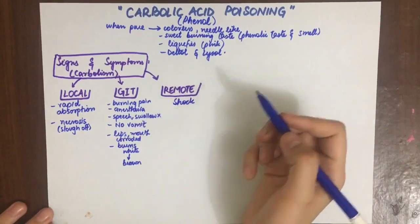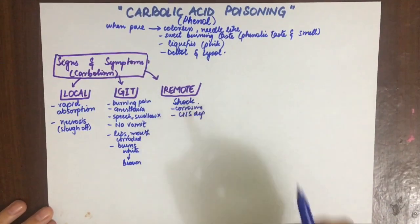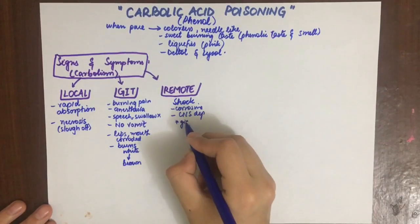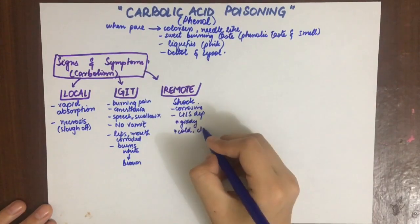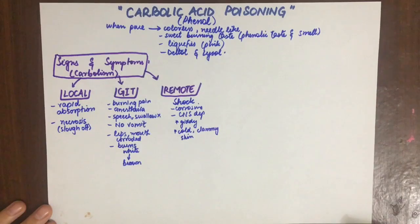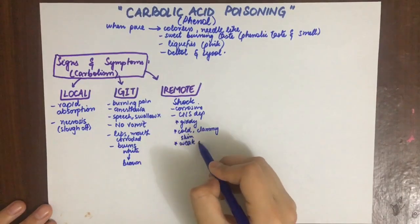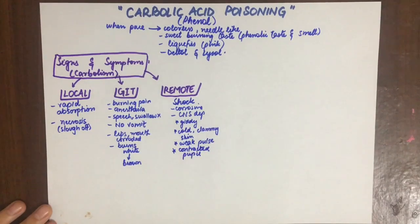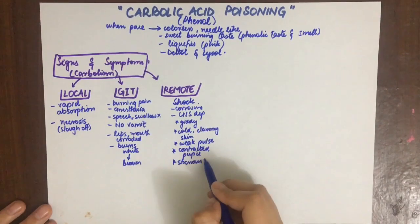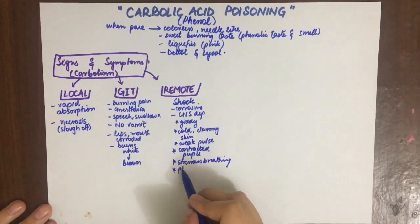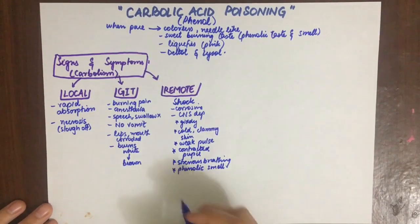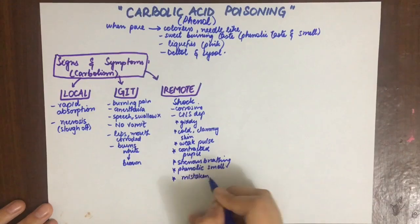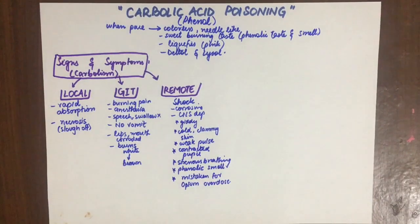The remote effects are mainly shock due to its corrosive and CNS depressing effects. The patient is giddy with cold clammy skin. A weak and thready pulse is observed. Contracted or pinpoint pupils are seen. There is strenuous breathing and phenolic smell, and it can be mistaken for opium poisoning or overdose, which has similar characteristics.